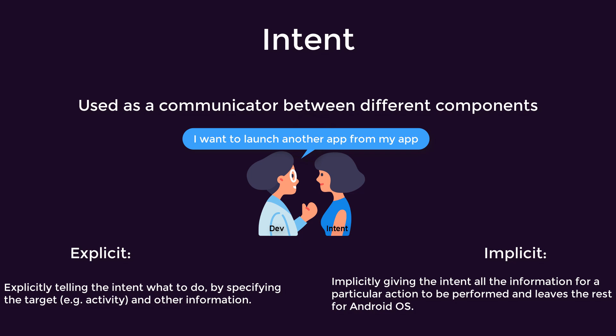Unlike the second type — the implicit intent — which is used to request an action from another app or component that can handle the request without specifying the target explicitly. You just let the Android system handle the request and show the user the applications that are suitable for this action. In this video we are going to create a couple of examples of how we can use the intent to do multiple actions within the Android system.